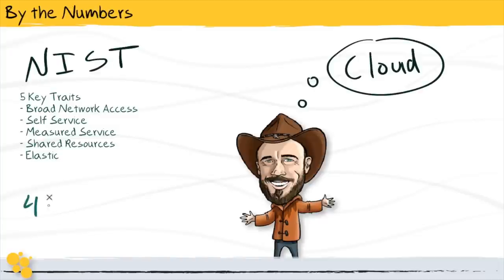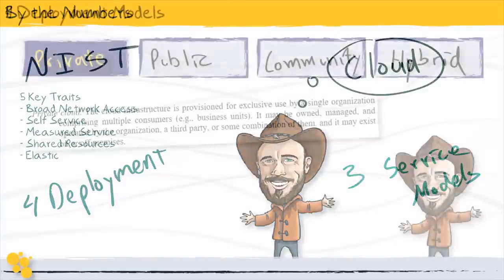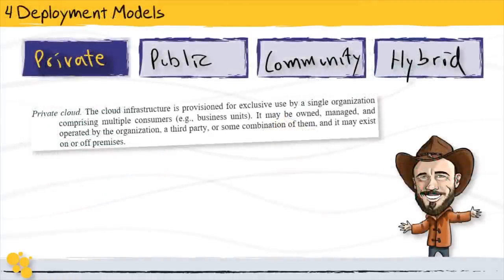In this lesson, we're going to be talking about the four deployment models that NIST defines. In future lessons, we'll also be talking about the three service models they describe. The first deployment model we look at is private cloud, and this one causes the most confusion because it has a somewhat muddy definition.